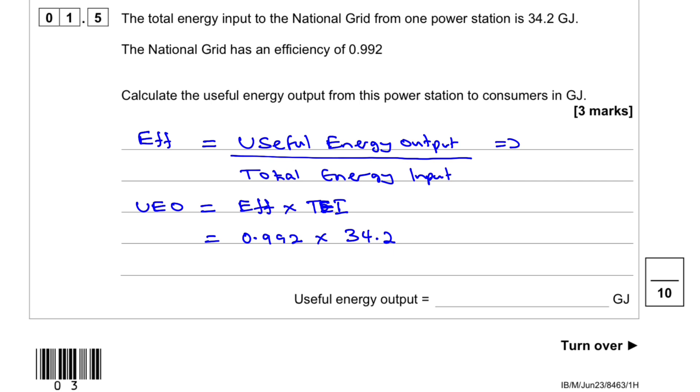But we can leave that as in gigajoules because we don't need to change that unit. If we calculate that with a calculator, we get 33.9 gigajoules. And so this will be 33.9 gigajoules.